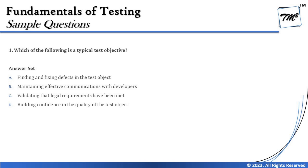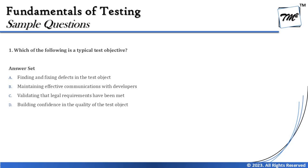Let's get started. The very first question from Chapter 1, Fundamentals of Testing, is right here. It says: which of the following is a typical test objective? We know from the syllabus about test objectives — there's a big list, and we should adhere to them to get the right answer. Option A says 'finding and fixing defects in a test object' — very catchy and very distracting.